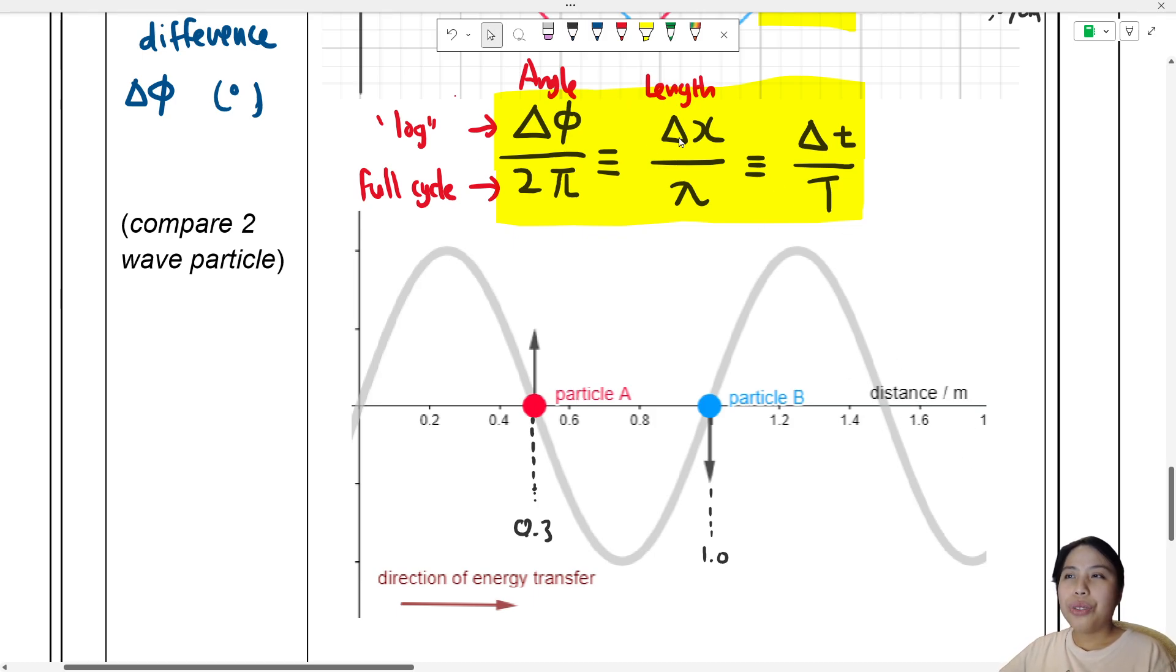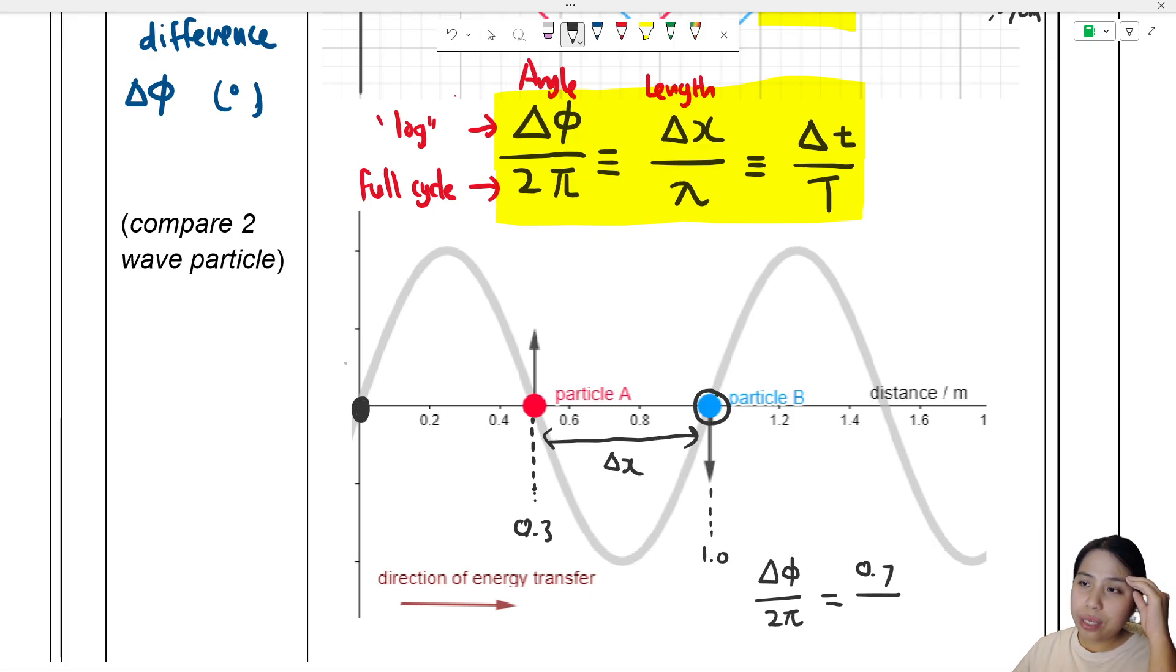And then this other number here is 1.0. So if we apply the same formula - can we check? This is distance. So we're going to do a ratio of length to angle. This distance here is going to be the ΔX. So we'll do Δφ over 2π equals to ΔX, which will be 0.7 over one full wavelength. I guess we could start from here until here and consider that one full wavelength as an approximation. So one full wavelength roughly 0.7.